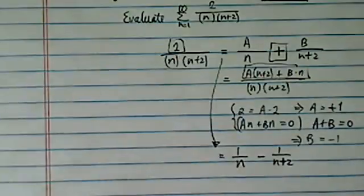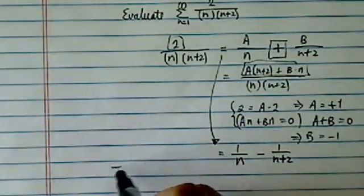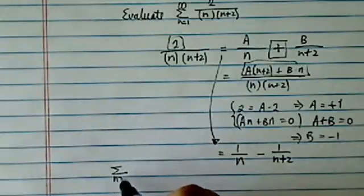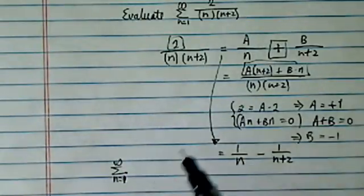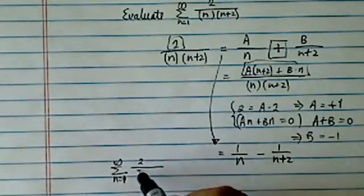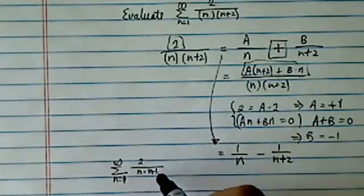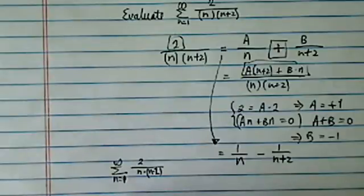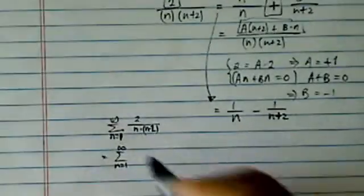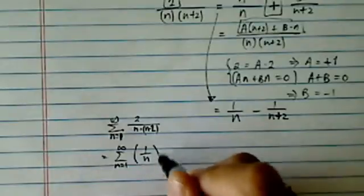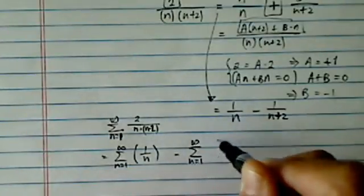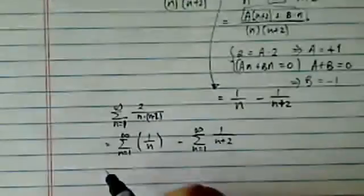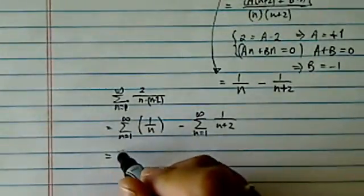Now this is actually the fun part. Let's take a look at what happens to the sum itself. n equal to 1, start at, there's 2 over n times n plus 2 becomes the infinite sum, n equal to 1 to infinity of 1 over n minus n equal to 1 infinity of 1 over n plus 2. Now watch this, the fun part. We start a cancellation here.